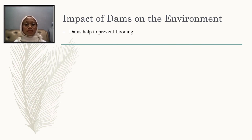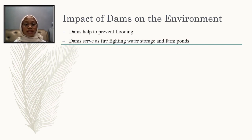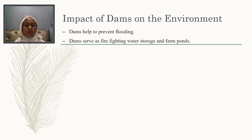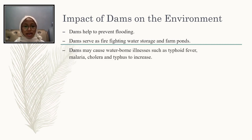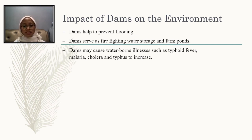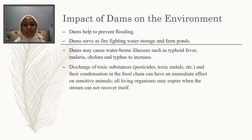Second, dams serve as firefighting water storage and farm ponds. Dams provide water reservoirs throughout the US for many purposes including commercial, urban, and agricultural uses. Dams may also cause waterborne illnesses such as typhoid fever, malaria, cholera, and typhus to increase. Additionally, dams can discharge toxic substances such as pesticides, toxic metals, and others.